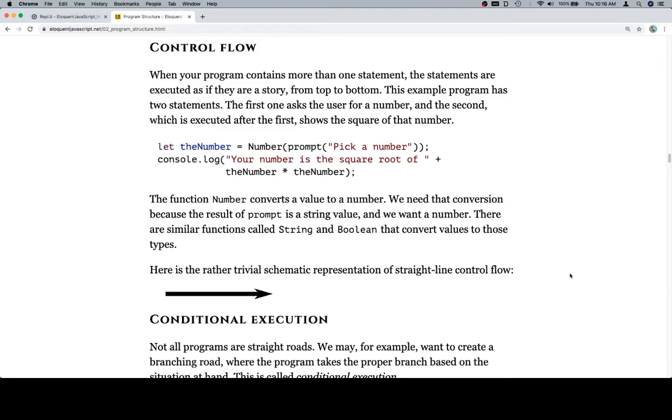Let theNumber = Number(prompt("Pick a number")); console.log("Your number is the square root of " + theNumber * theNumber);